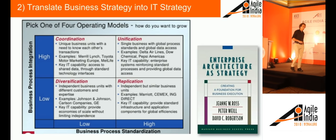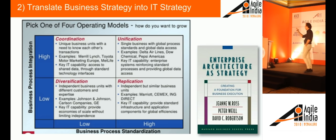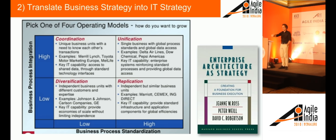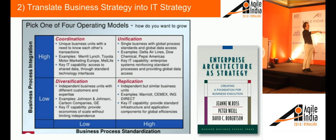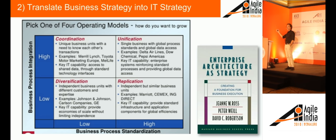The very first book about enterprise architecture is called Enterprise Architecture as Strategy. As so often with the first book, it's an important book but not always the best, because it's the very beginning of the collective understanding. I would say it has one most important diagram — a 2x2 matrix. The good news with 2x2 matrices is that management has been sufficiently inundated with them by McKinsey, so they always understand everything in a 2x2 matrix.